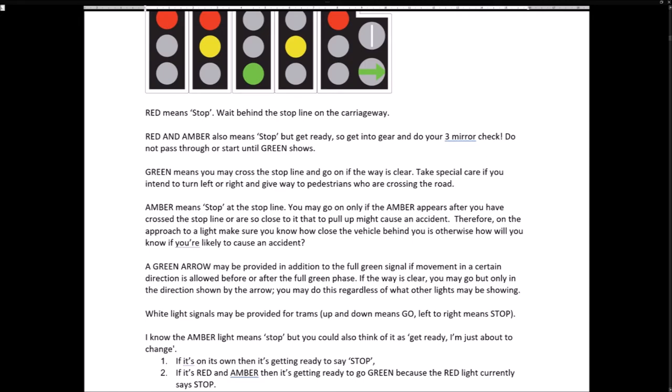Green means you may cross the stop line and go on if the way is clear. Take special care if you intend to turn left or right and give way to pedestrians who are crossing the road. A green arrow may be provided in addition to the full green signal if movement in a certain direction is allowed before or after the green light phase. If the way is clear, you may go, but only in the direction shown by the arrow, regardless of what other lights may be showing. White light signals may be provided for trams: up and down means go, left and right means stop.